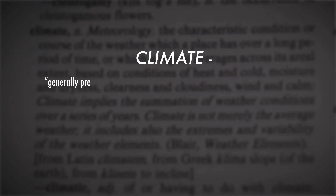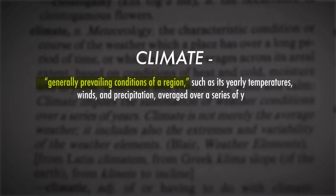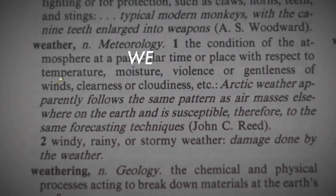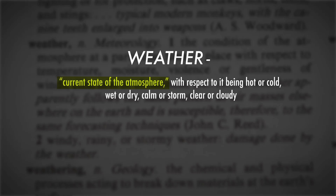The dictionary defines climate as the generally prevailing conditions of a region, such as its yearly temperatures, winds, and precipitation averaged over a series of years. While the weather is defined as the current state of the atmosphere with respect to it being hot or cold, wet or dry, calm or stormy, clear or cloudy.